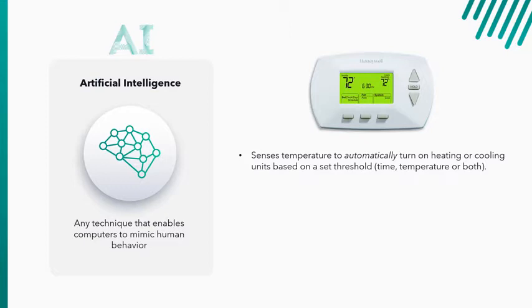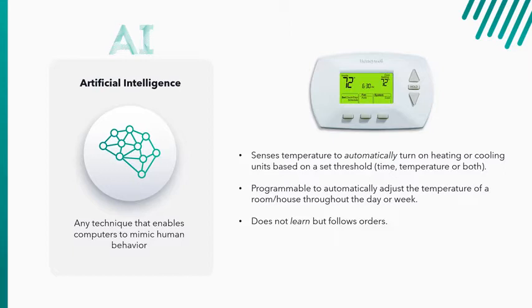So it's basically programmable to automatically adjust so you can program it to come on and off during different times or different days. But it doesn't learn. It simply follows the orders that you're giving it. I want the temperature at 72 degrees from 7 in the morning until 4 o'clock in the afternoon. So it can adjust temperature, but it does so based on your predefined program. That's the simplest form of AI.